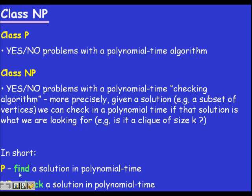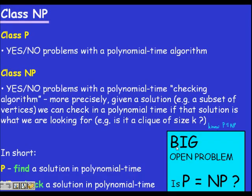So, now, in short, you can find for P, find a solution in polynomial time. And for NP, you can check whether a solution is correct or not in polynomial time. So, big problem is that you have to find whether P is equal to NP. We showed that P is a subset of NP, but is P equal to NP? This is a big question. If you solve it, you will become the most famous person on earth, at least very famous.